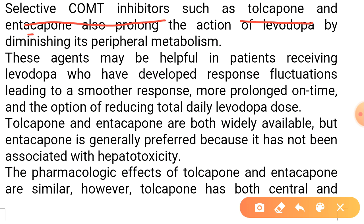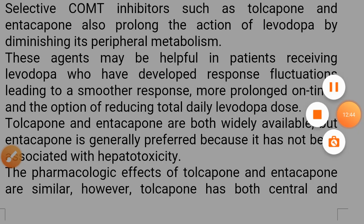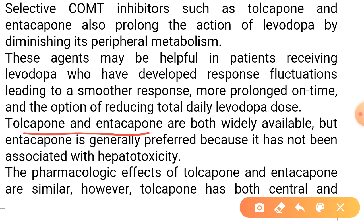Selective COMT inhibitors, such as tolcapone and entacapone, can prolong the action of levodopa. If you give a COMT inhibitor alongside levodopa, 3-O-methyldopa will not be formed and levodopa's action will be extended. These agents may be helpful in patients receiving levodopa who have developed response fluctuations, leading to a smoother response, more prolonged 'on' time, and the option of reducing the total daily levodopa dose — the same advantages we discussed with dopamine agonists.